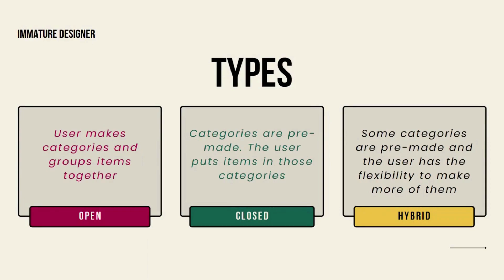The third type is hybrid card sorting. In this, you give some flexibility to the user so they can also make their own groups. There are some pre-made categories — for example, home screen, purchase, orders, and payment — but if the user finds that an extra category like 'favorites' is needed, they can create it. So there are groups made by you and additional groups made by the user. Hybrid is a mixture of open and closed card sorting.